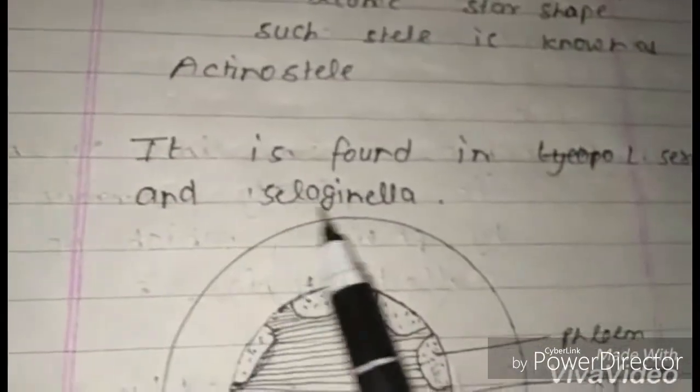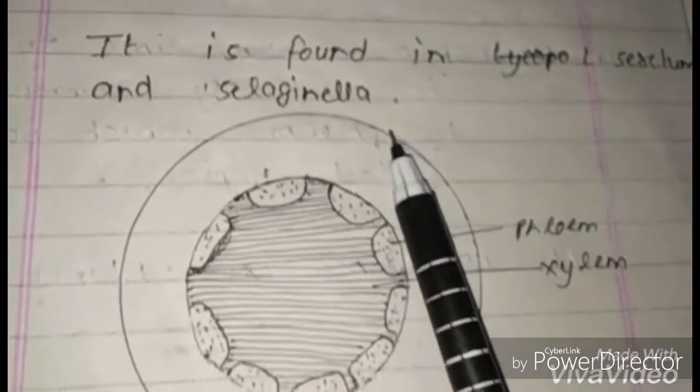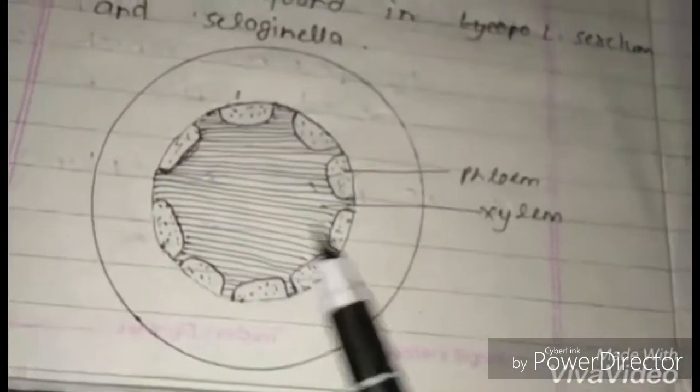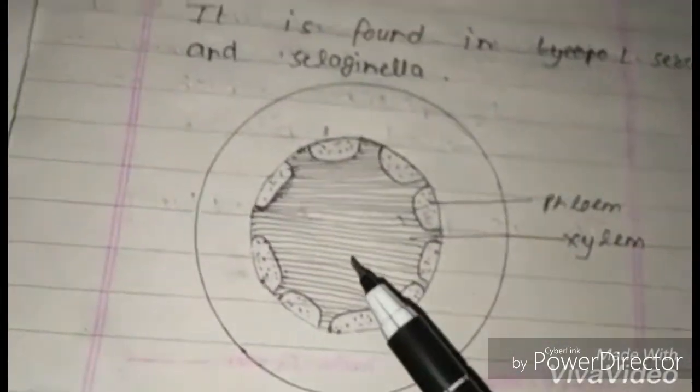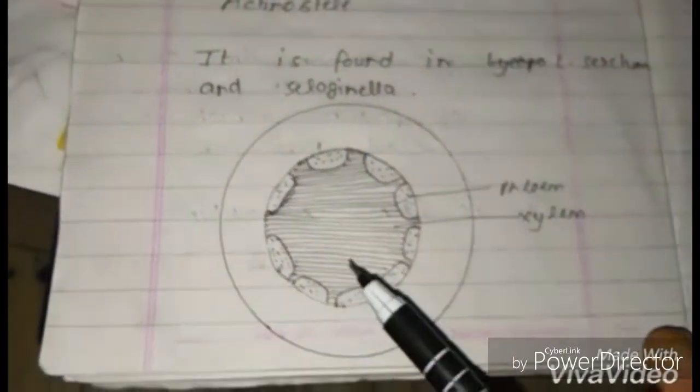Actinostele: sometimes xylem becomes star-shaped; such a stele is known as actinostele. It is found in Lycopodium serratum and Selaginella. Here is the figure of actinostele.